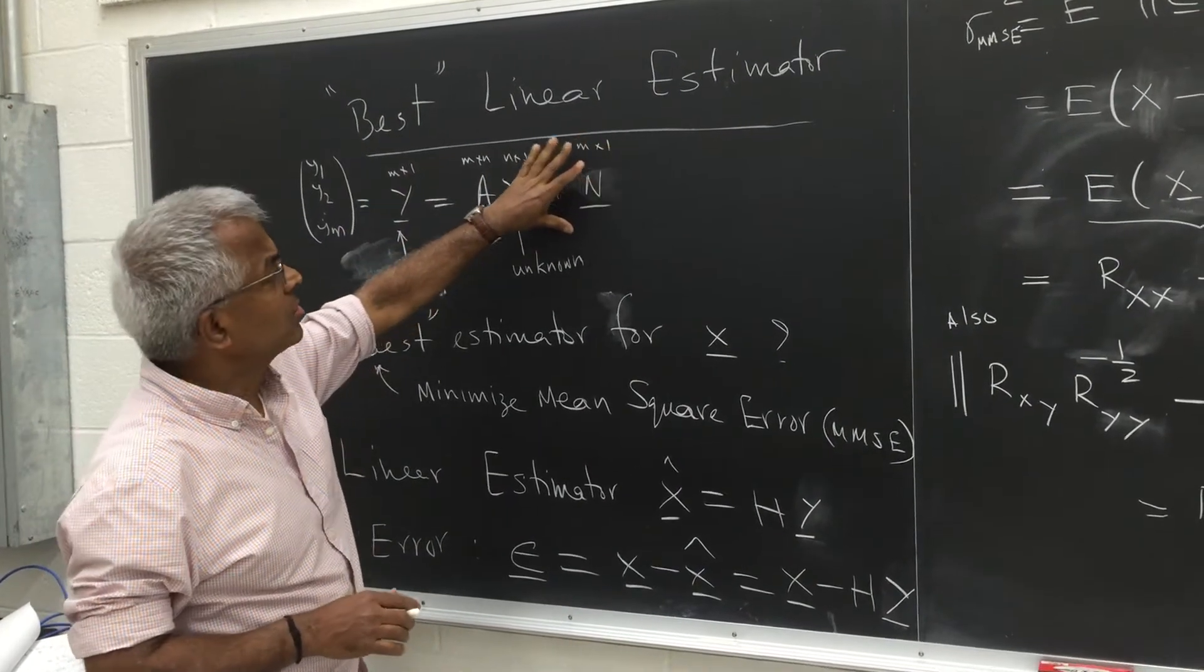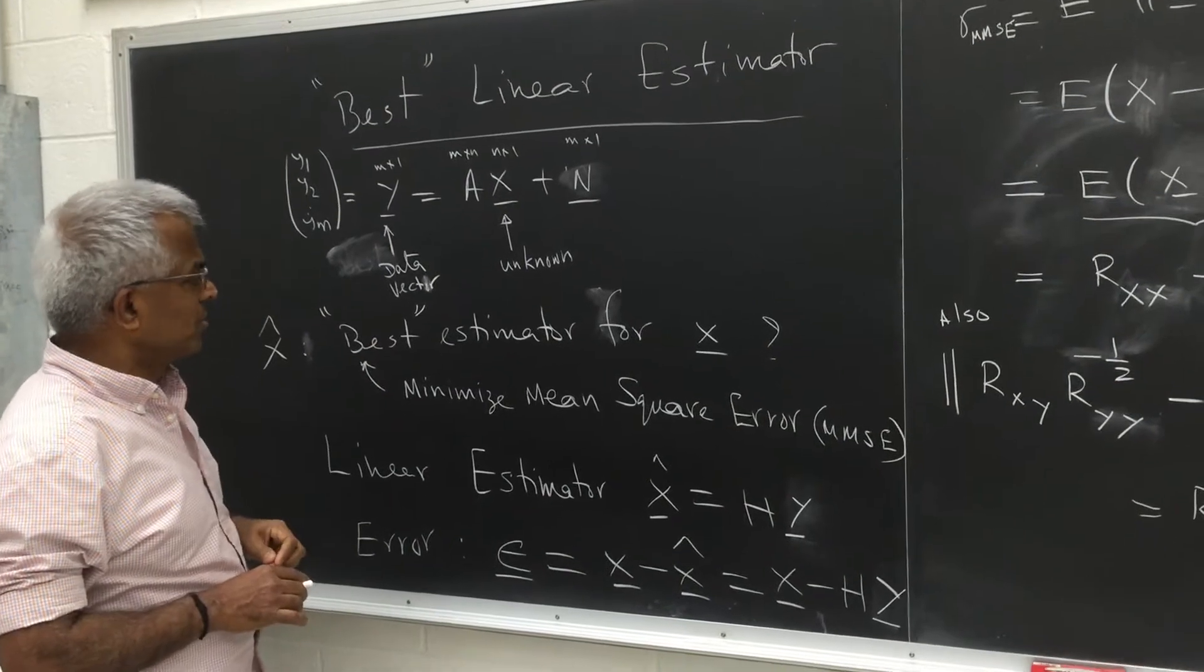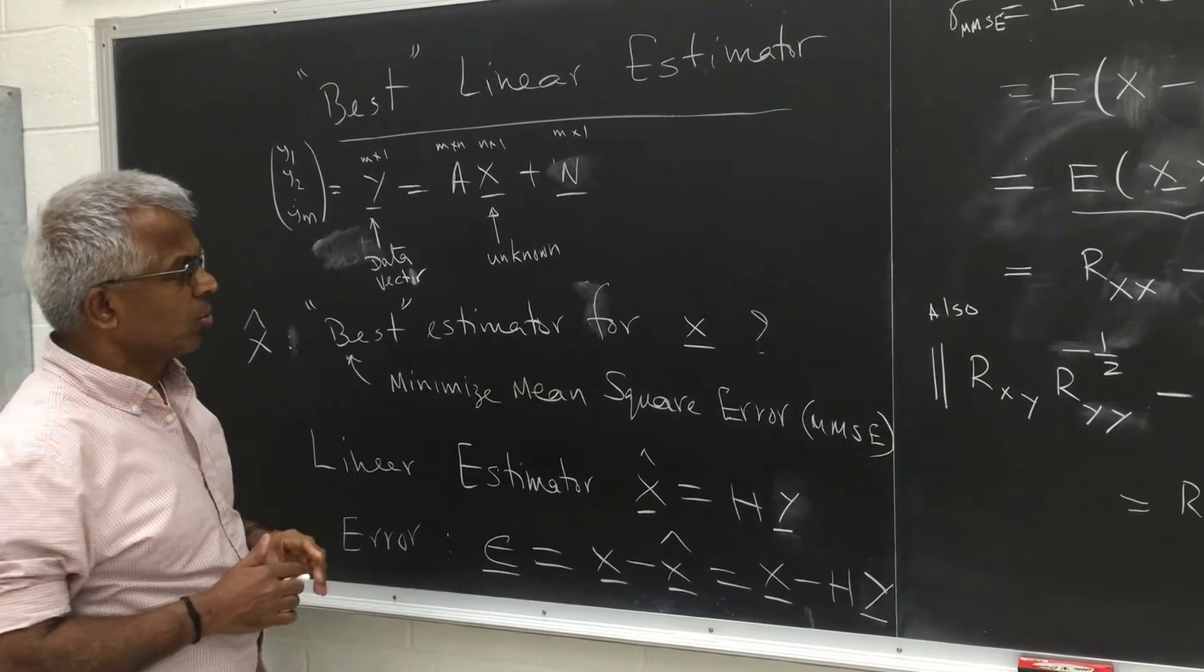So n is noise with some covariance matrix R_nn. So what we mean by best is minimize the mean square error.